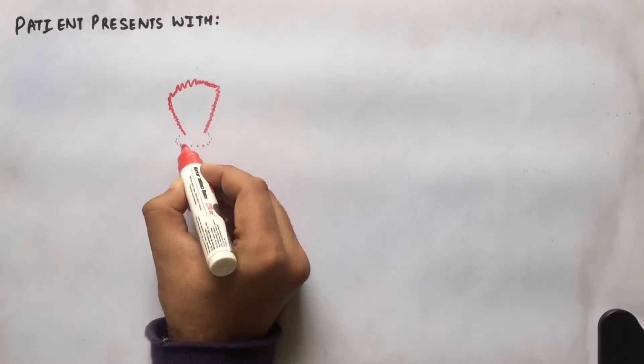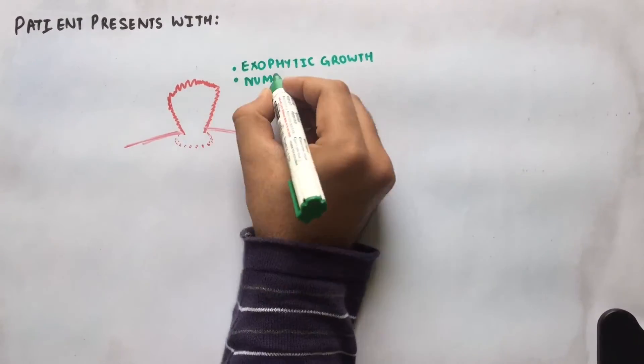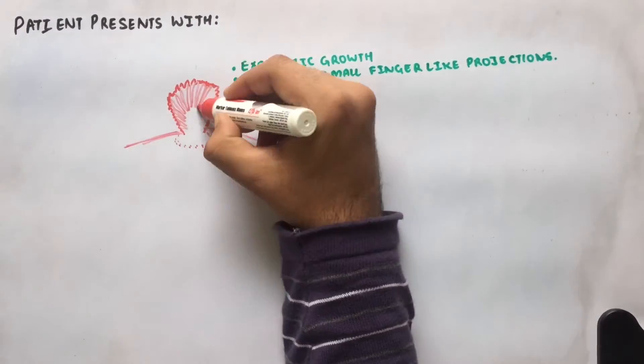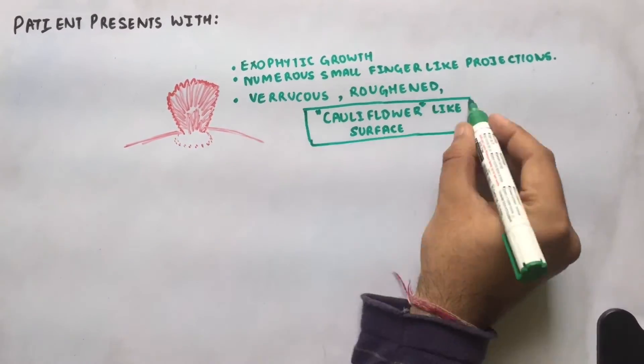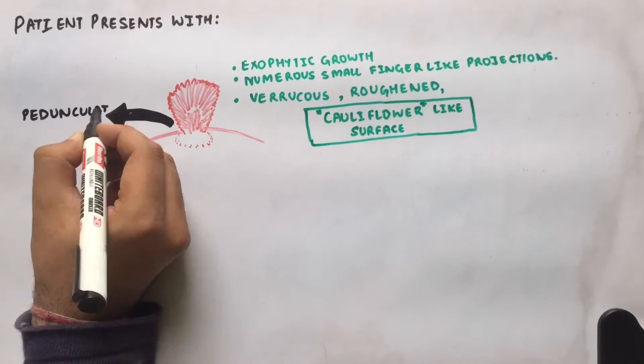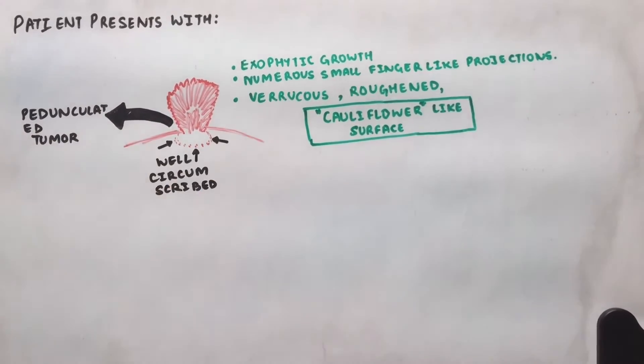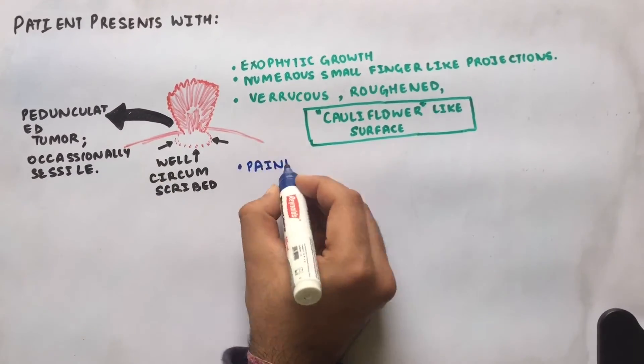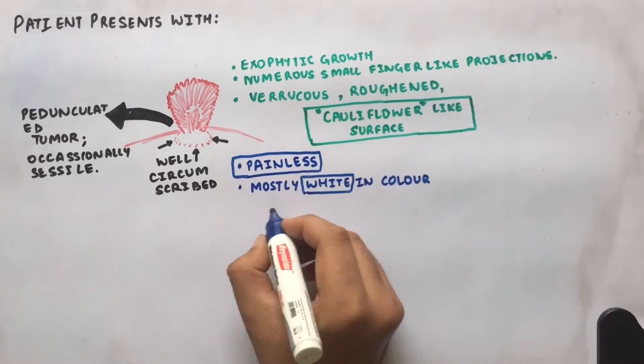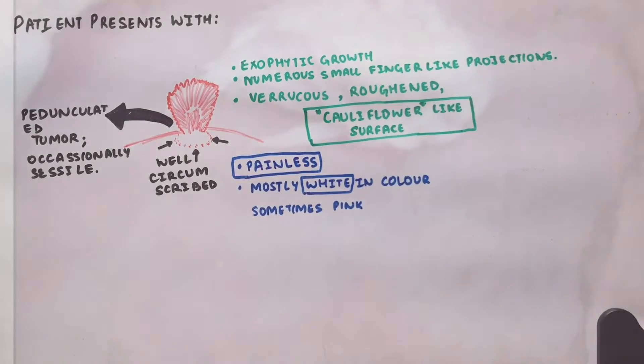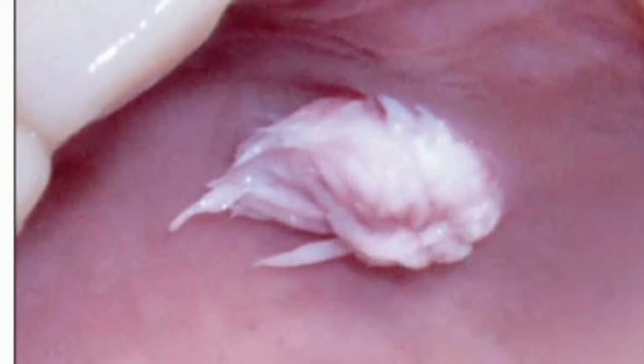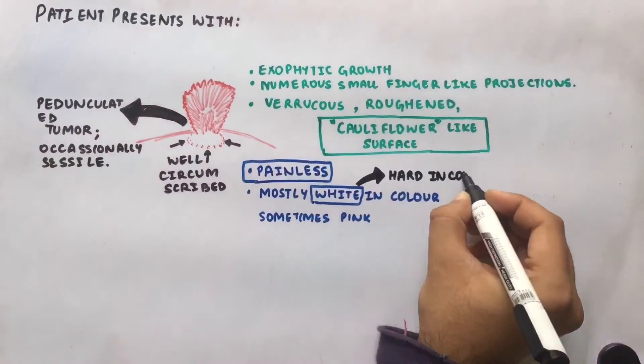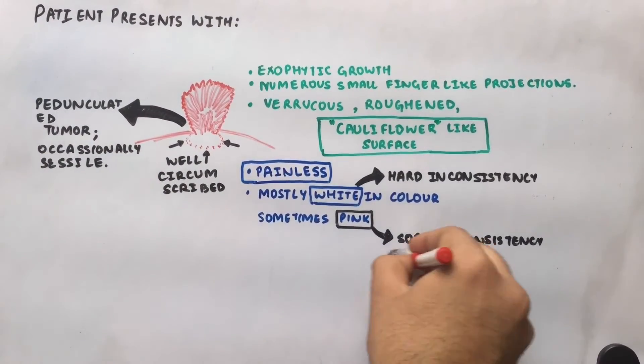This is an exophytic growth made up of numerous small finger-like projections, resulting in a lesion which is roughened, verrucous, or cauliflower-like. This is a well-circumscribed, pedunculated tumor which is painless, mostly white in color, sometimes it may be pink. If white in color, the lesion must be hard in consistency, and if pink in color, it will be soft in consistency.